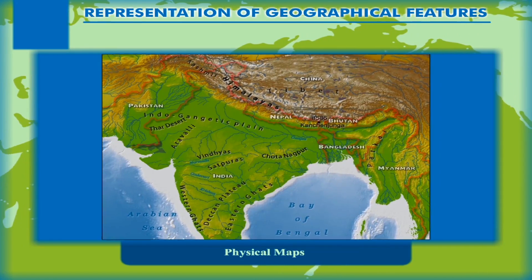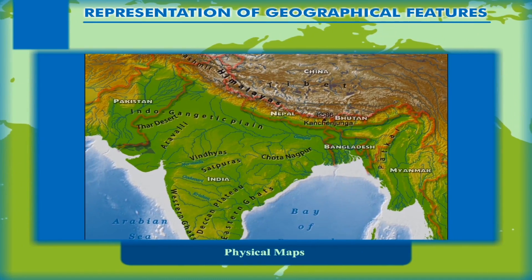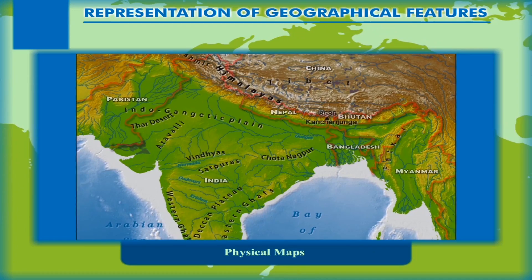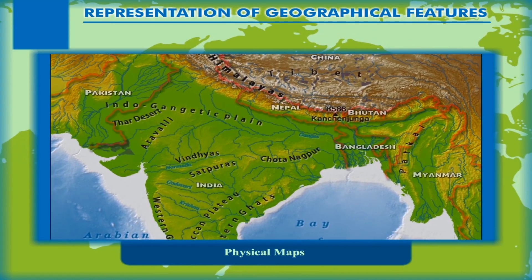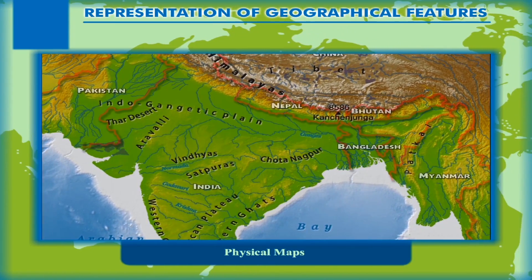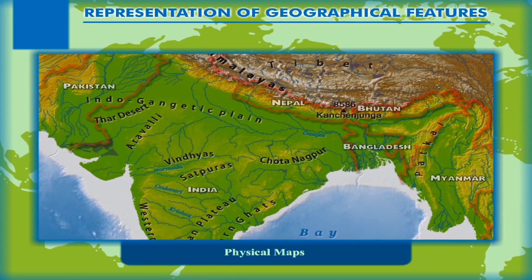Physical maps show the natural features of the Earth like mountains, plains, plateaus, water bodies, etc.